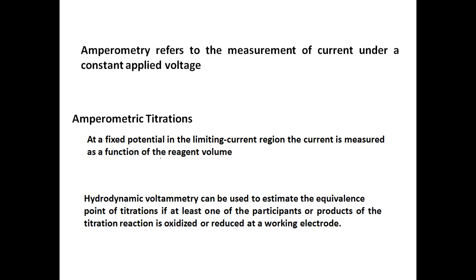When you perform a volumetric titration using this amperometric method, it is called an amperometric titration. At a fixed potential in the limiting current region, the current is measured as a function of reagent volume. The constant potential applied corresponds to the region where the electrolytic species can undergo a redox process, and the current change at that potential is measured as a function of the volume of reagent added.